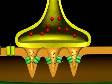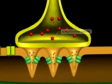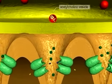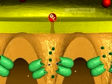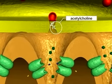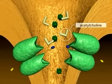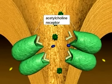As the action potential reaches the neuromuscular junction, vesicles containing acetylcholine fuse with the membrane of the nerve terminal and acetylcholine is released into the cleft. Acetylcholine molecules rapidly diffuse across the cleft and bind to the acetylcholine receptors.